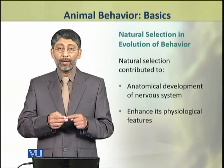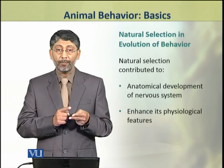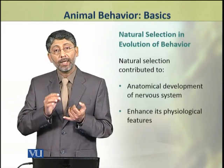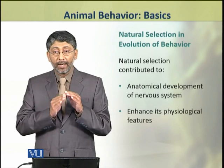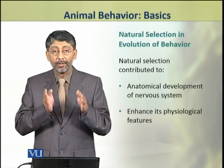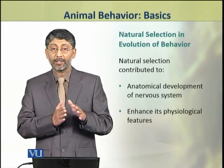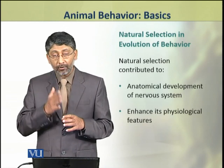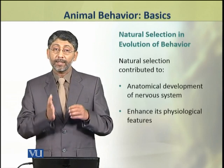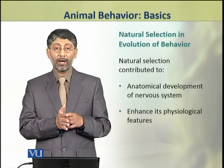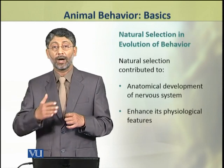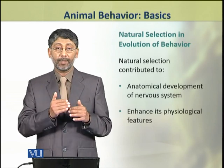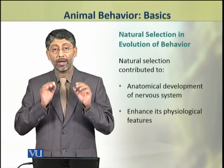Natural selection has contributed to the development of behavior in two major ways: first, through the anatomical development of the nervous system; and second, by enhancing the physiological features of the nervous system. As animals advanced, the physiology of their nervous system also became quite complex, enabling them to carry out complex behavioral patterns.